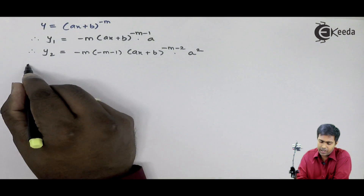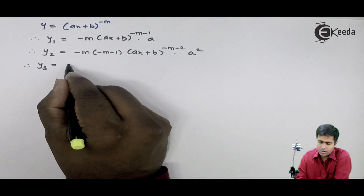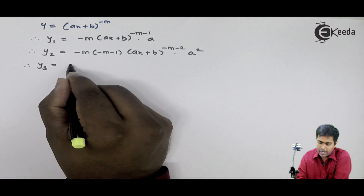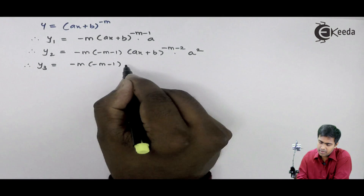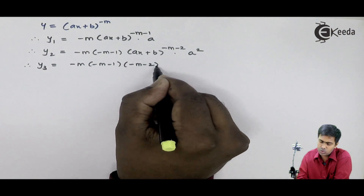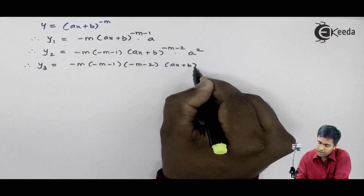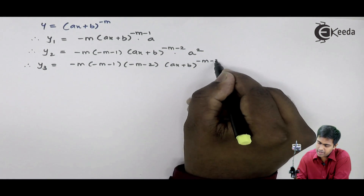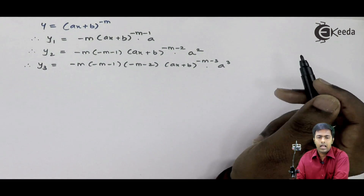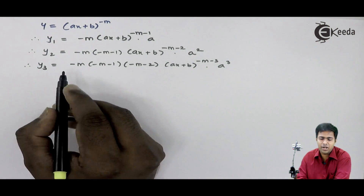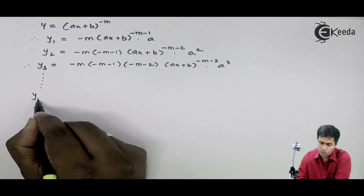Let's find what y3 could be. y3 is nothing but minus m times minus m minus 1 times minus m minus 2 times (ax + b) raised to minus m minus 3, times a cubed. Now it's time to find out what yn could be.